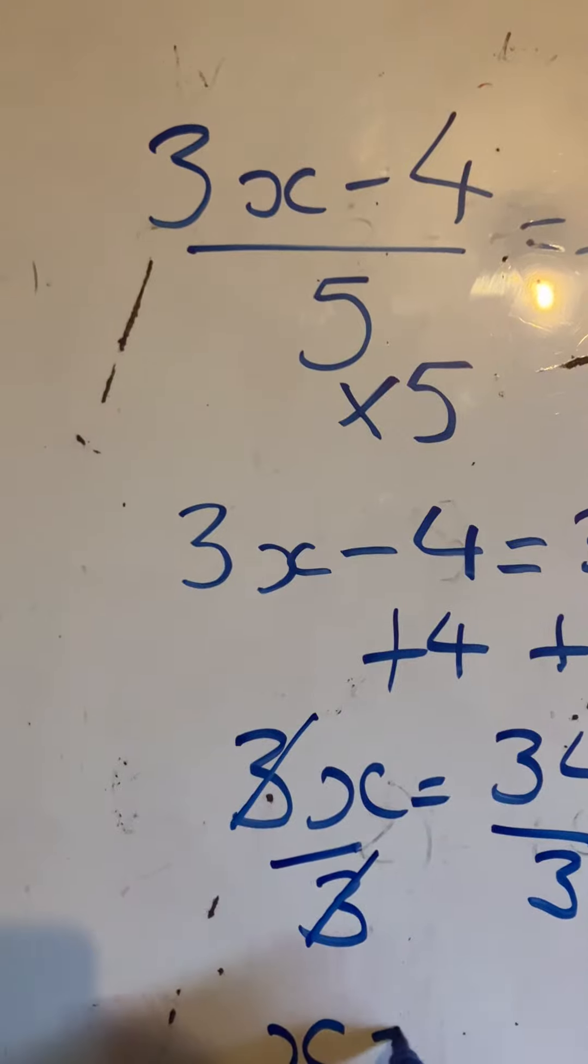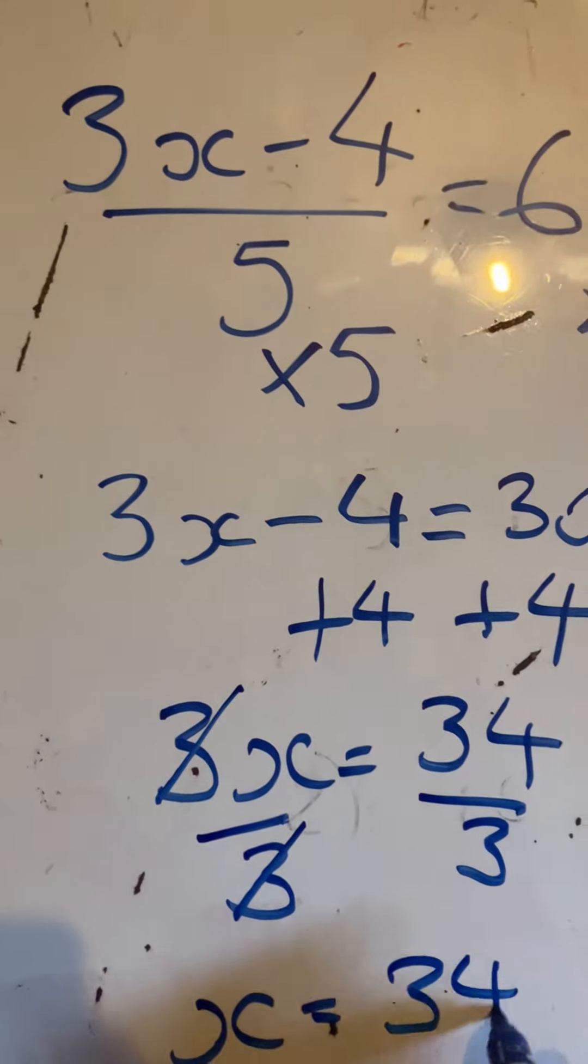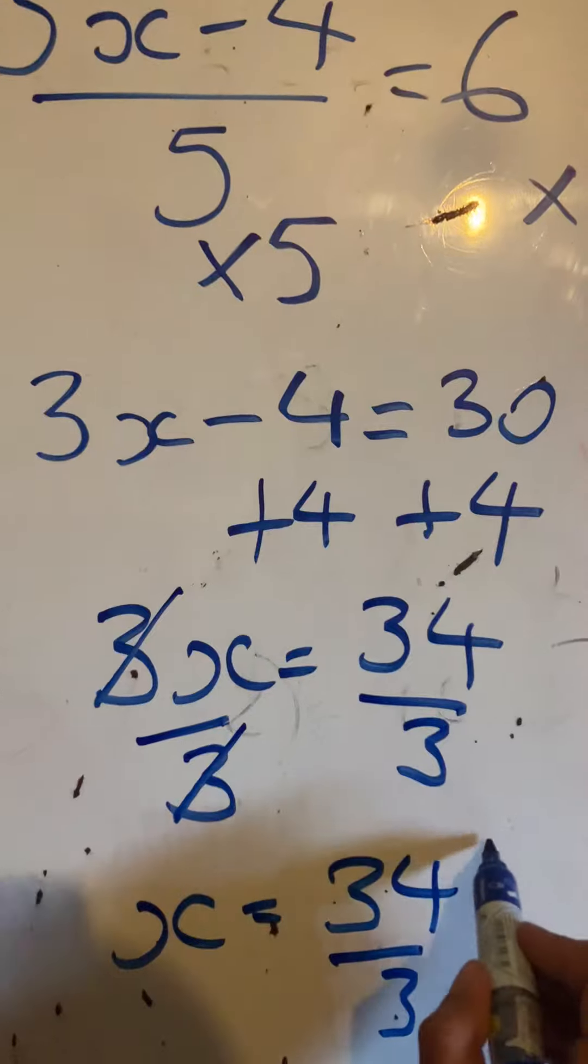They cancel, so I get that x is equal to 34 thirds, and that guys is my final answer.